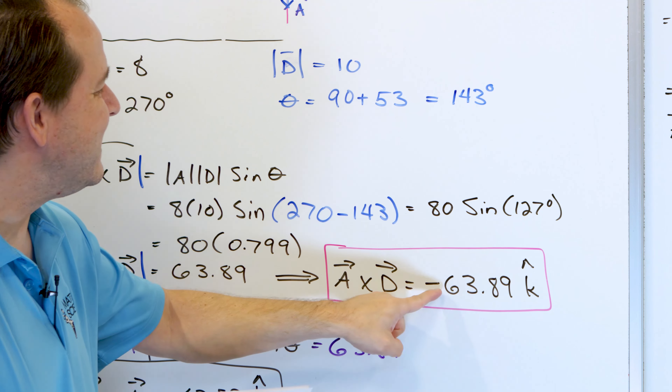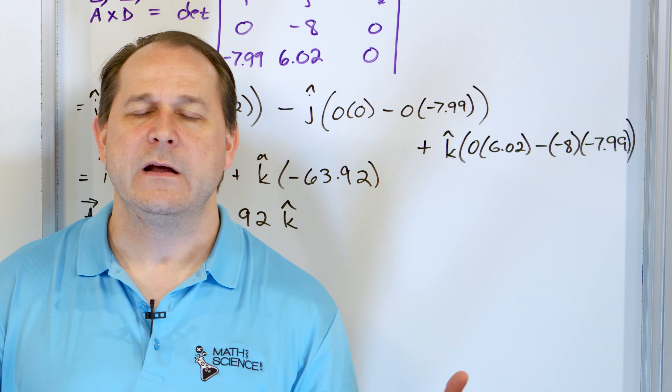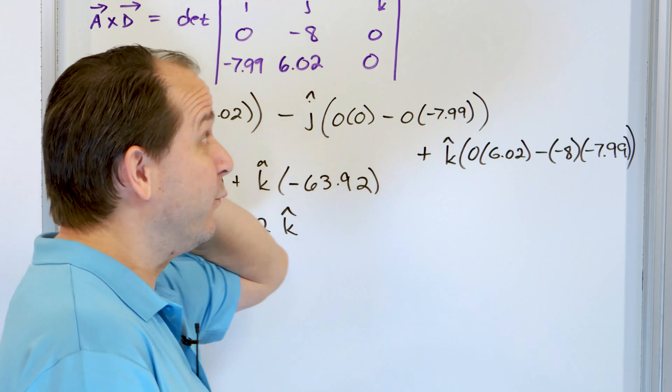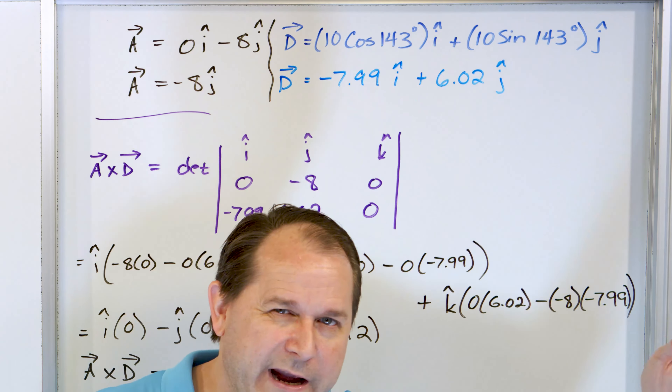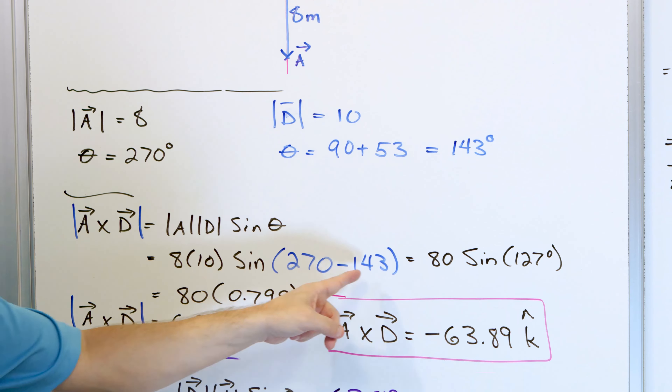We got negative 63.89 K-hat using the magnitude-angle method, and negative 63.92 K-hat using the determinant method. The difference is just from carrying only two decimal digits when computing the D vector components and when taking the sine of 127 degrees. If you carry more decimals, the results converge. Both methods give essentially the same answer, verifying that they're consistent.